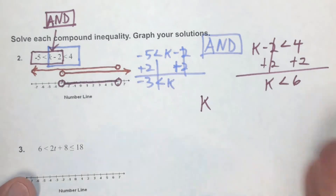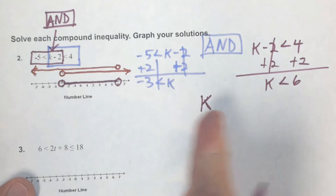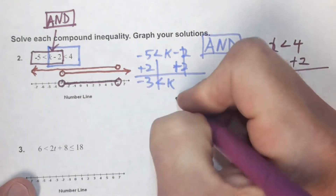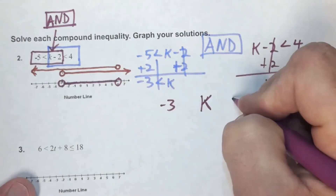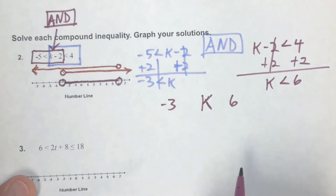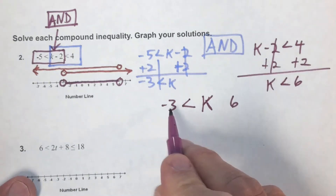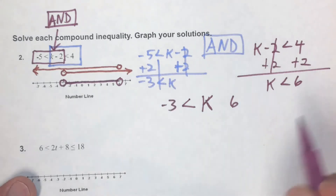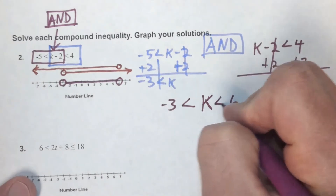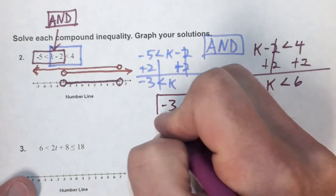Write it in concise notation: put k in the middle, go least to greatest — negative three less than k less than six. Both inequality signs must face the same direction. Verify: k greater than negative three ✓, k less than six ✓. This shorter notation means the same thing.